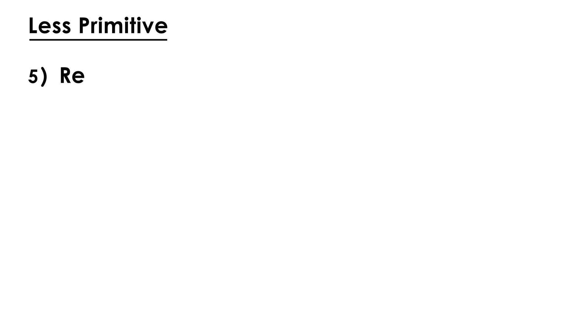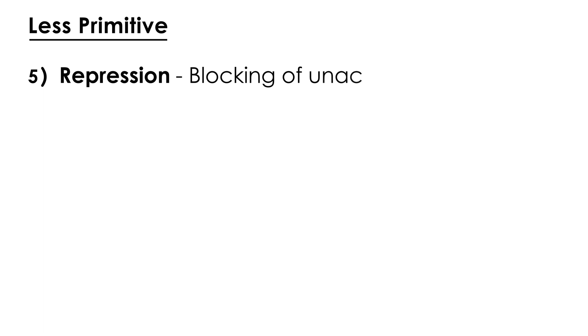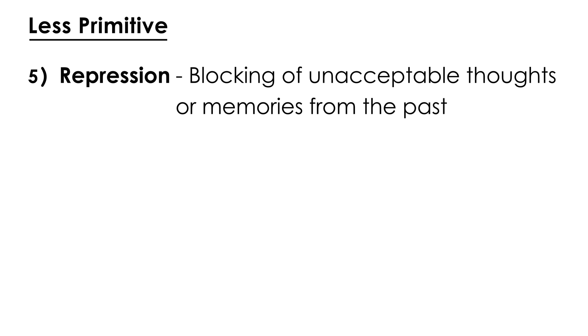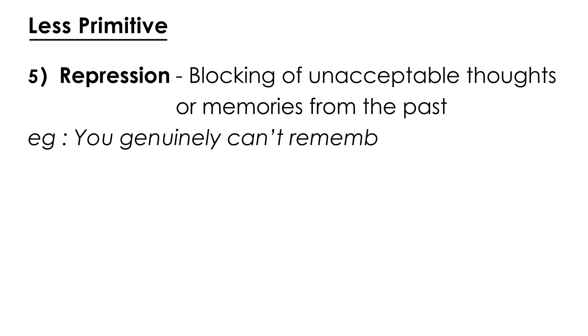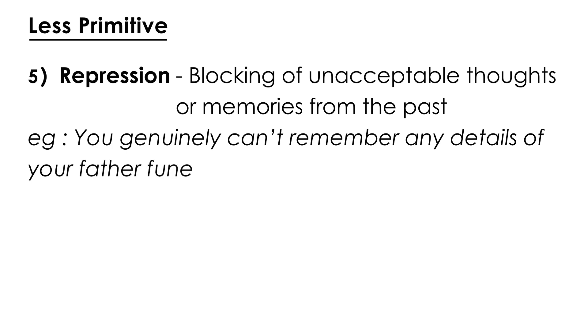Now the less primitive defense mechanisms. The first is repression — when a person blocks unacceptable thoughts or memories from the past. An example is when someone genuinely does not remember any details of their father's funeral. It was such an unacceptable memory that they have genuinely blocked it out from their brain and cannot remember anything about it.